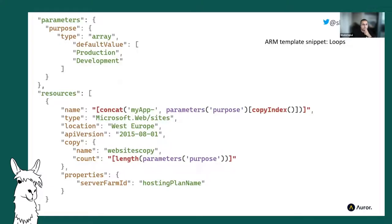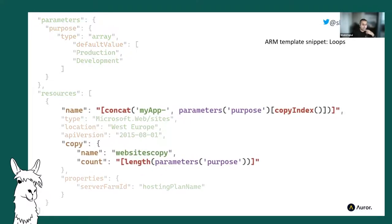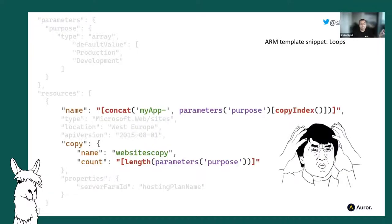Where things really start becoming problematic is loops. In ARM, we're trying to loop through a collection of parameters and create a number of websites. We're taking the name, doing a concat of 'my-app-' and then indexing into the array with a copyIndex() function, and there's a copy block using the length of the array as the number of iterations. This is really simple — just two properties, two strings — but what if you wanted to take a number of different properties or use an object instead of a simple string array? Come back to this code in a few months and you'll be struggling.